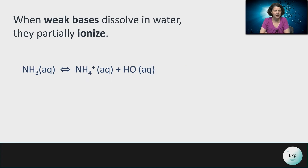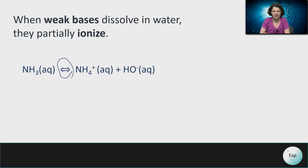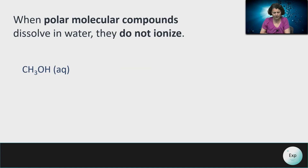For weak bases that are also molecular compounds, the same process applies — an ionization process occurs. In this case, ammonia becomes the ammonium ion. Because this is a partial ionization step, we also indicate it with the use of the double-sided arrow. If we have polar molecular compounds that dissolve in water but do not ionize or release any ions in solution, we keep them together.